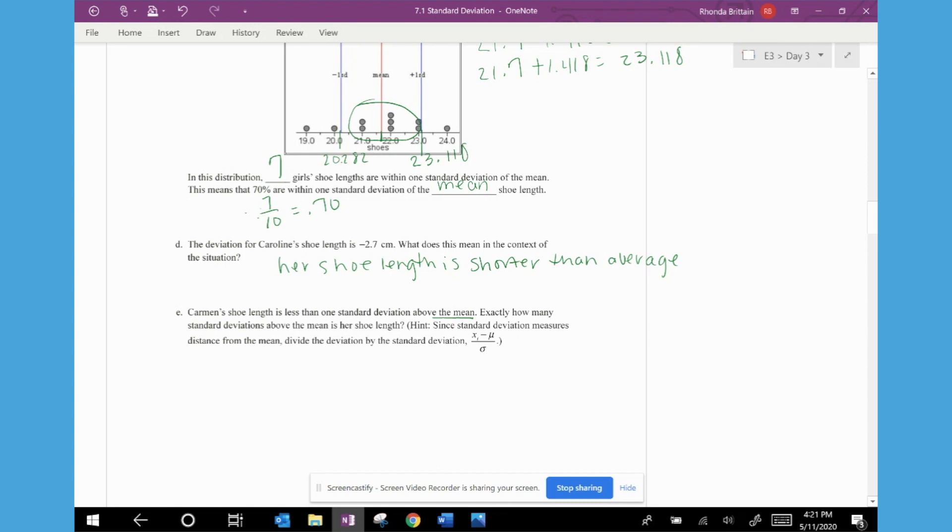On part E, it says Carmen's shoe length is less than one standard deviation above the mean. So we know that it's going to be a positive deviation. Exactly how many standard deviations above the mean is her shoe length? So the hint here says since standard deviation measures distance from the mean, divide the deviation by the standard deviation. So when we look back on page one at Carmen and recalculate, it looks like her shoe size is 23. I subtract the mean of 21.7 and then we divide by our population standard deviation. So when we calculate that, we're going to get the number 0.917.